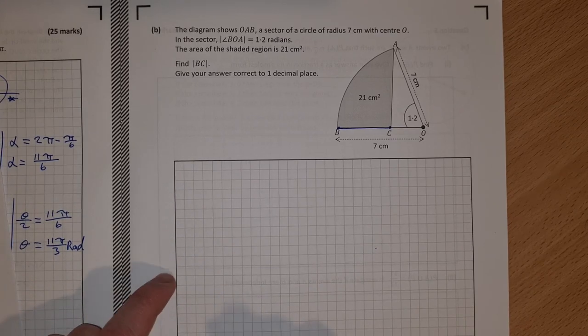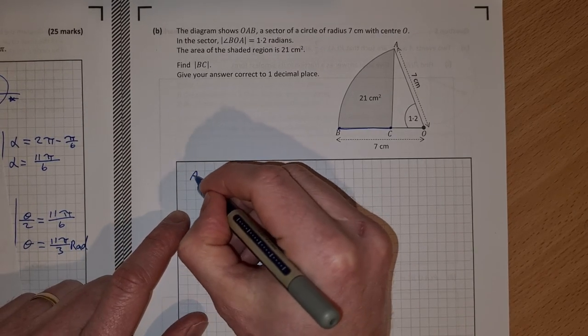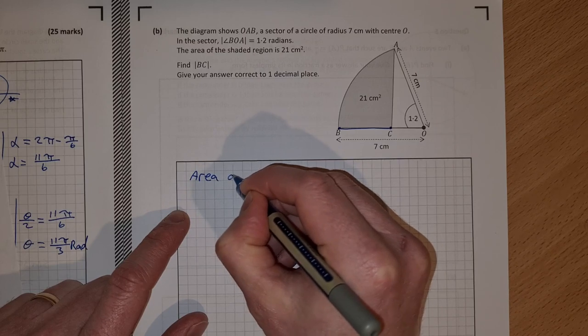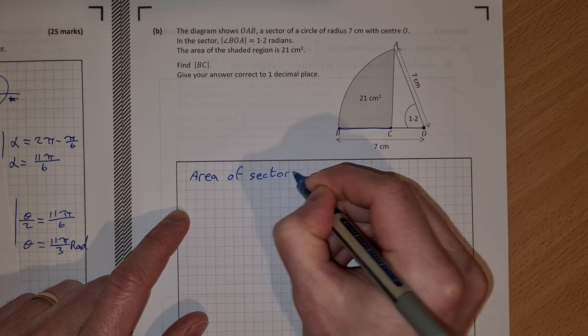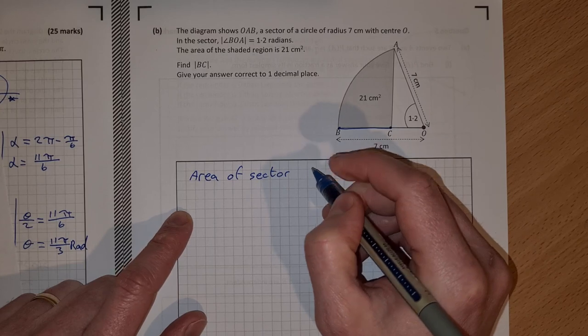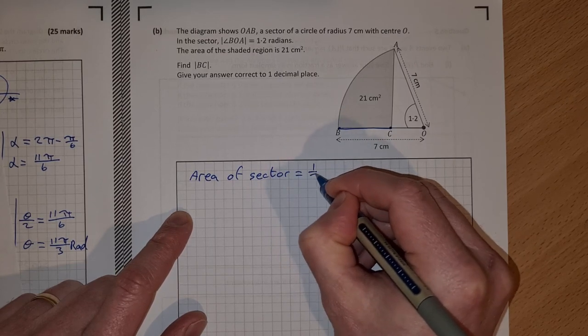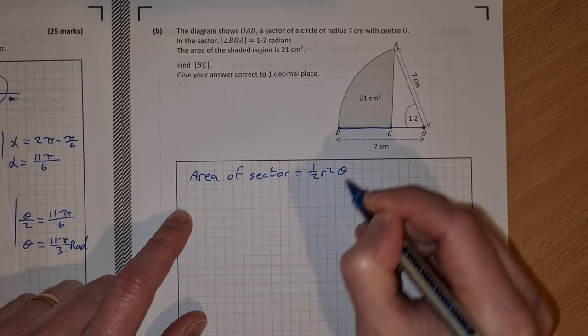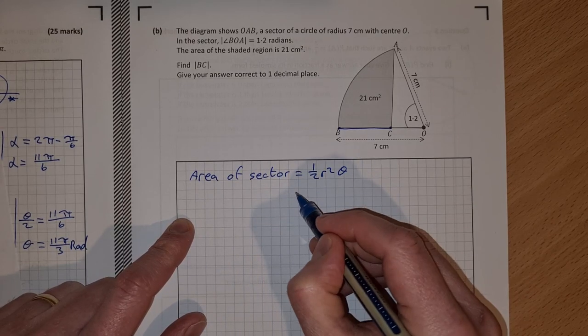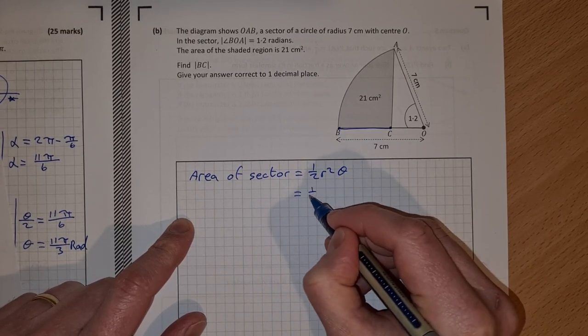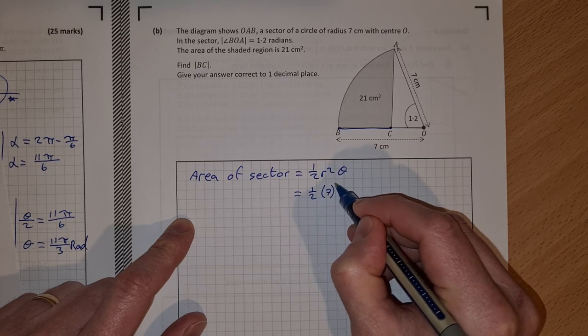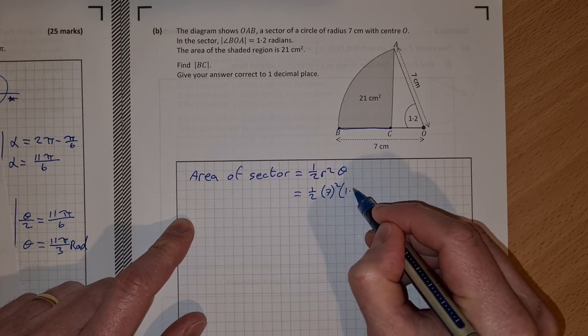The area of a sector is half R squared theta when it's in radians. So I can sub that in. That's half times R, which is 7, so that's 7 squared, and theta is 1.2.